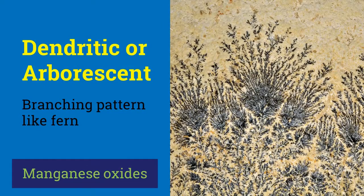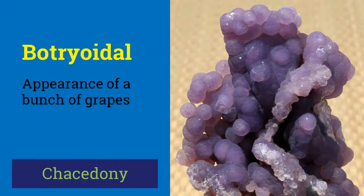Minerals that exhibit branching patterns like ferns have dendritic habit. Manganese oxide has this habit, and the name is derived from Latin where dendron means tree. Minerals appearing as a bunch of grapes, like smithsonite, chalcedony, and prehnite, are said to have botryoidal habit. This name is derived from the Greek root botrys, meaning bunch of grapes.